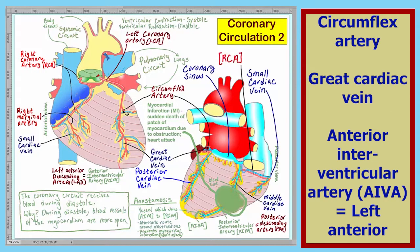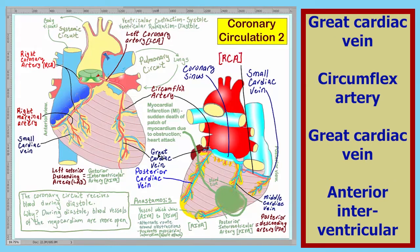The artery here that makes a circular path to the back of the heart is the circumflex artery. Shown here on the heart, we have the great cardiac vein which circles around to the back of the heart under the left auricle.